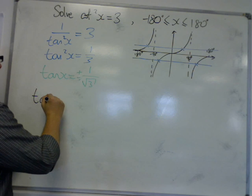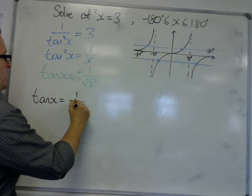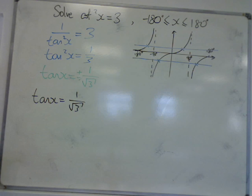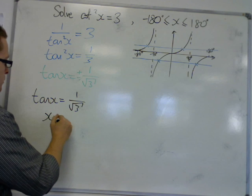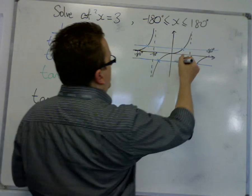So if we solve tan x is equal to 1 over root 3, then inverse tan of 1 over root 3 is 30 degrees, so x is equal to 30 degrees. So that is this solution.